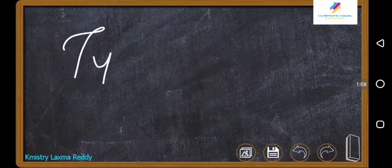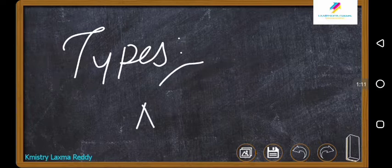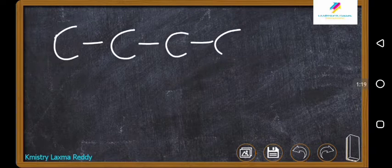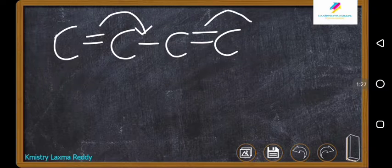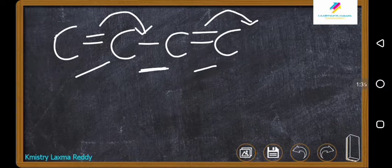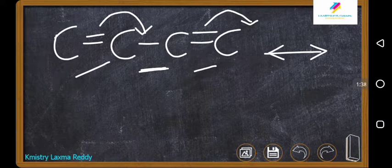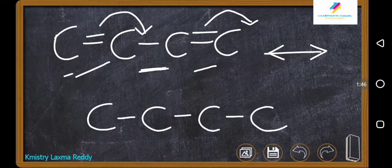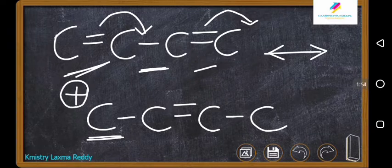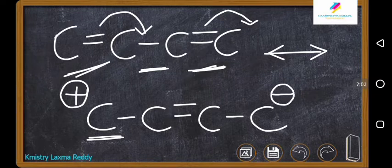The first type of conjugation is pi-pi conjugation. In a compound where two double bonds are separated by a single bond, the electron pair shifts — this bond moves here and this bond shifts here. When showing this with arrows, this is resonance. This carbon has lost its electrons so it gets a plus charge, and when the pi bond shifts onto this carbon, that carbon gets a negative charge.